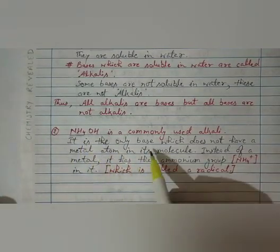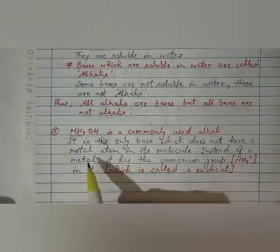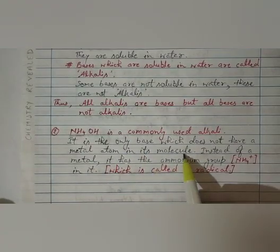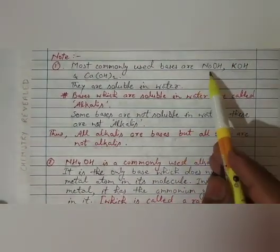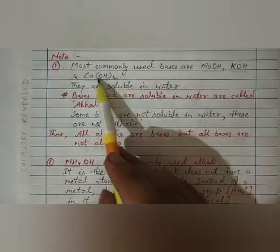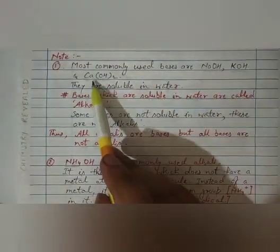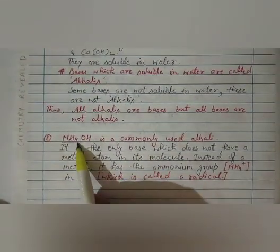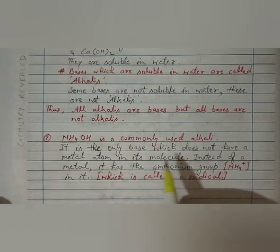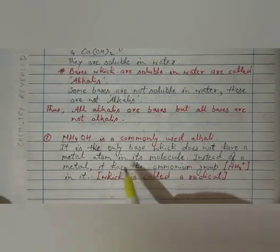So it is the only base which does not have a metal atom in its molecule. Earlier you can see that we have studied about sodium hydroxide, potassium hydroxide, calcium. These all are metals: sodium, potassium, calcium. But in ammonium hydroxide, it is not a metal. So this is the only base which is not having a metal atom in its molecule.